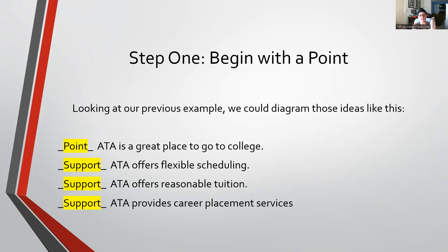Looking at the ACA example, we can list those sentences like this: 'ACA is a great place to go to college' is the point — the specific point of that paragraph. The other ideas — 'ACA offers flexible scheduling,' 'ACA offers reasonable tuition,' and 'ACA provides career placement services' — those are the support.